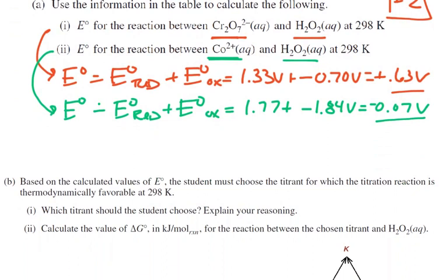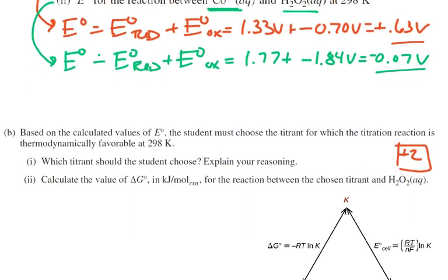Now the next part is also worth two points, and it says, based on the calculated values, the student must choose the titrant for which the titration reaction is thermodynamically favorable at 298 K. So which titrant should the student choose?